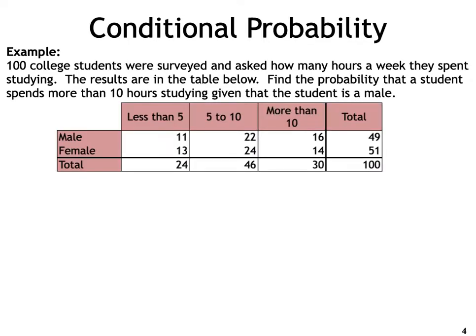Say 100 college students were surveyed and asked how many hours a week they spent studying. The results are in the table. We're going to find the probability that a student spends more than 10 hours studying given that the student is a male. The two events involved are: the event that the student studies more than 10 hours, and the event that the student is a male.